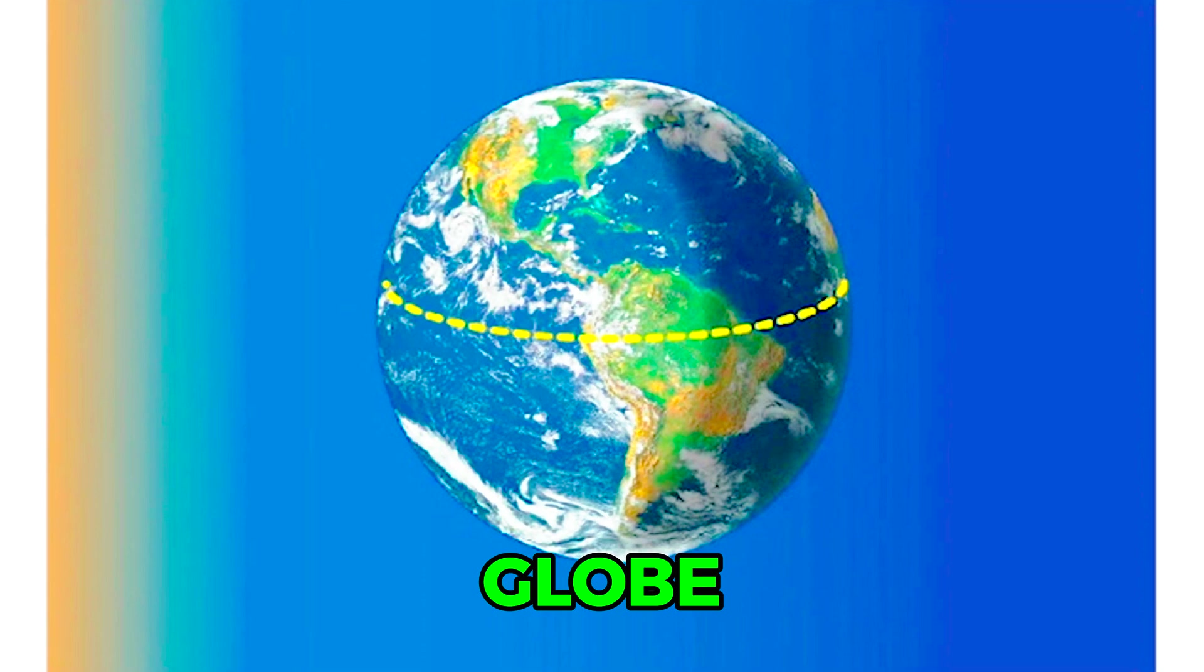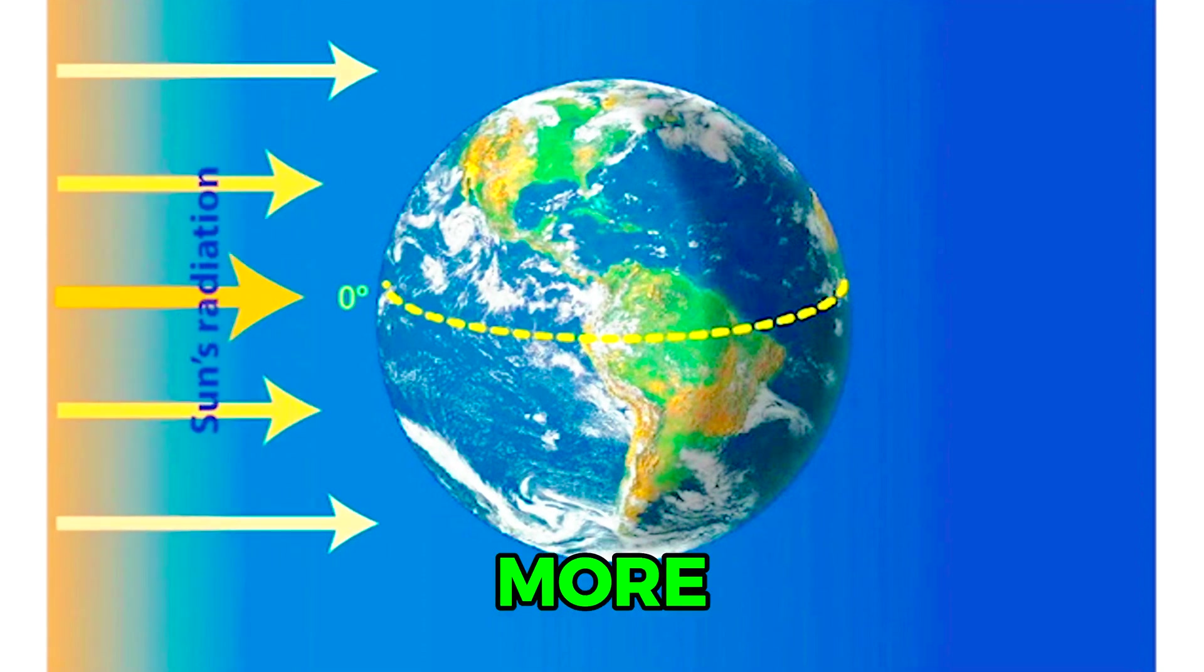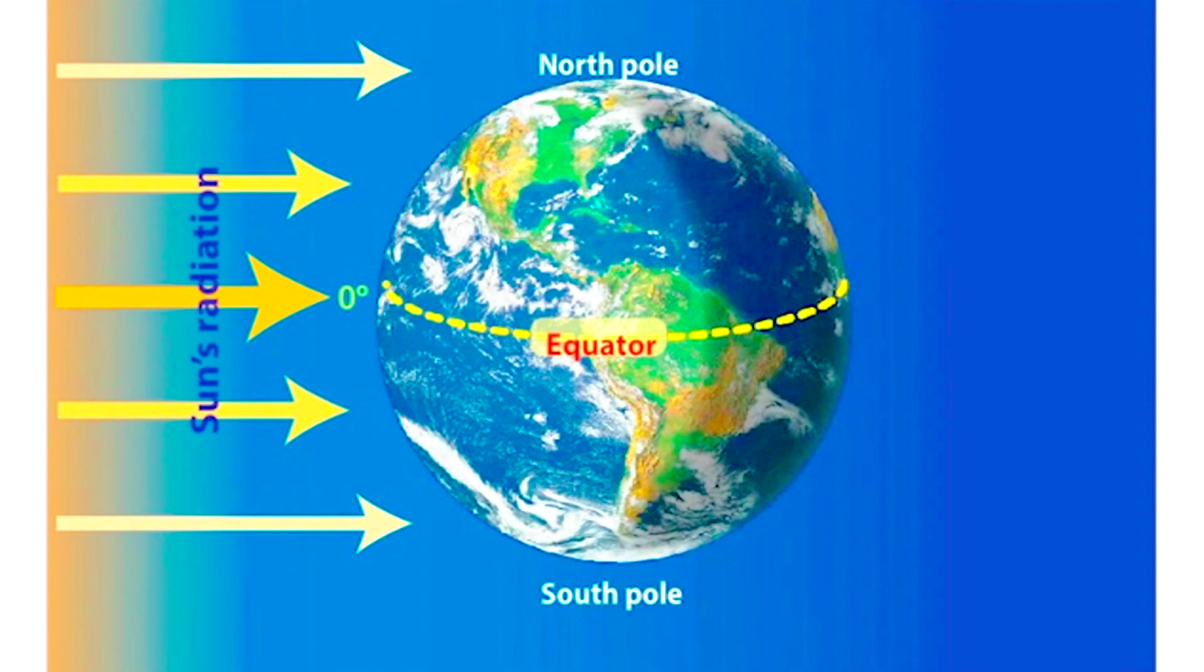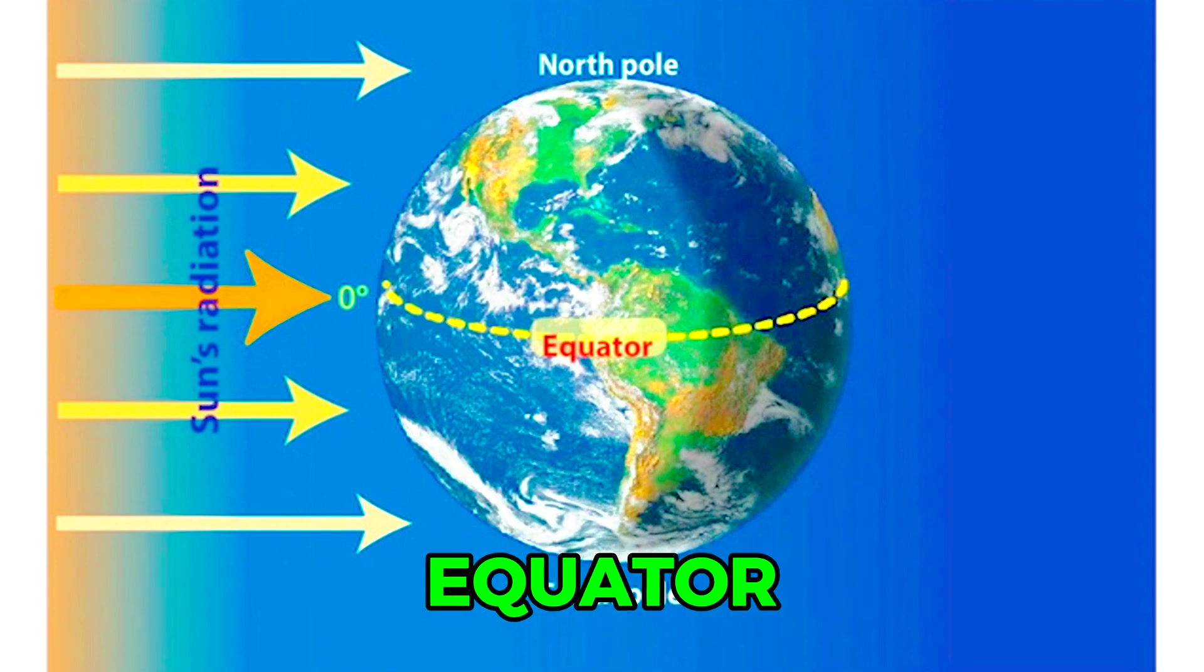Because the Earth is a globe, the Sun's rays hit more directly at the equator than near the poles. This means the Sun's energy is more concentrated near the equator and more spread out near the poles.